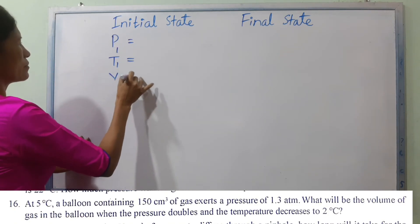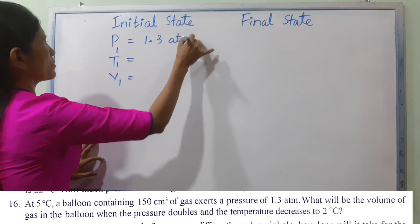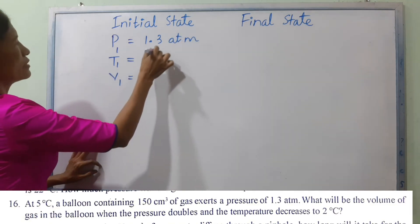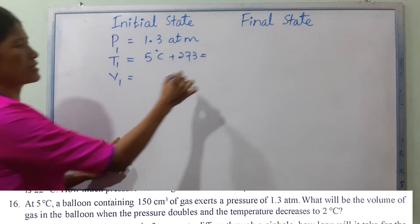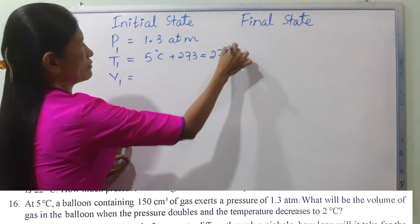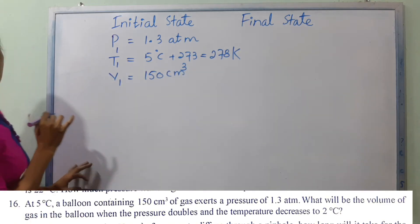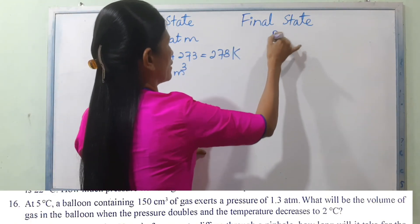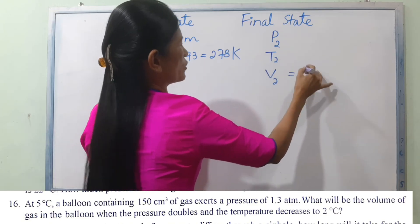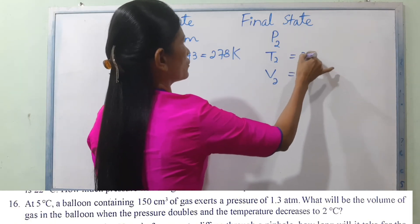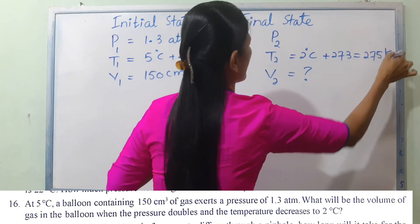Setting up the initial state: P1 is 1.3 ATM, T1 is 5 degrees Celsius plus 273 equal to 278 Kelvin, V1 is 150 cm³. For the final state: T2 is 2 degrees Celsius plus 273 equal to 275 Kelvin.